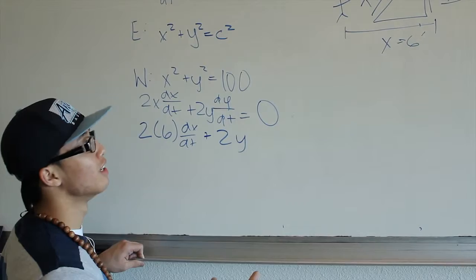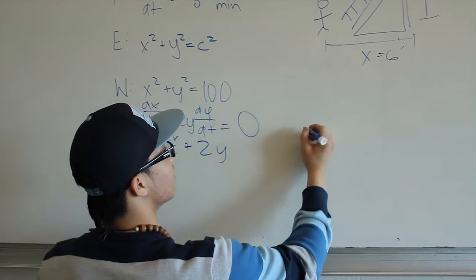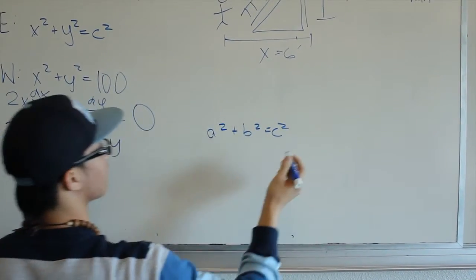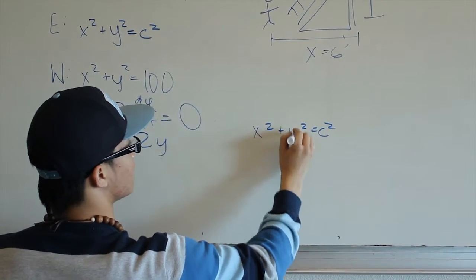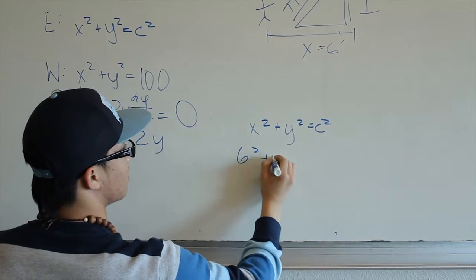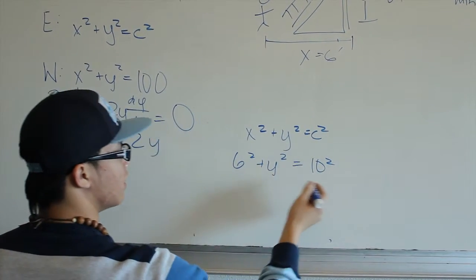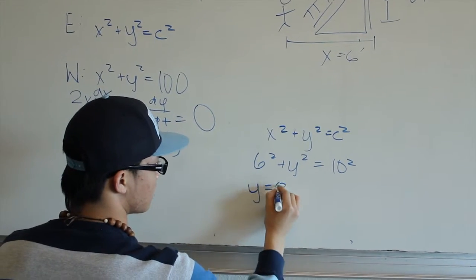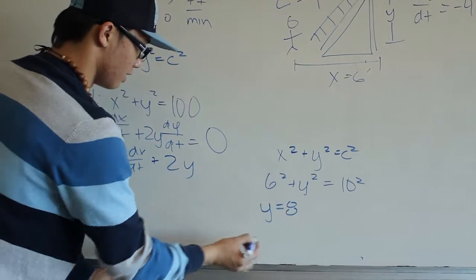Well, in order to solve, we're going to have to use the Pythagorean theorem again. So we have x squared plus y squared equals c squared. And let's plug it back in as x and y, which are represented as 6 squared plus y squared equals 10 squared. So after solving all of it, it should come up as y equals 8. So now we can plug in the 8 in for y.